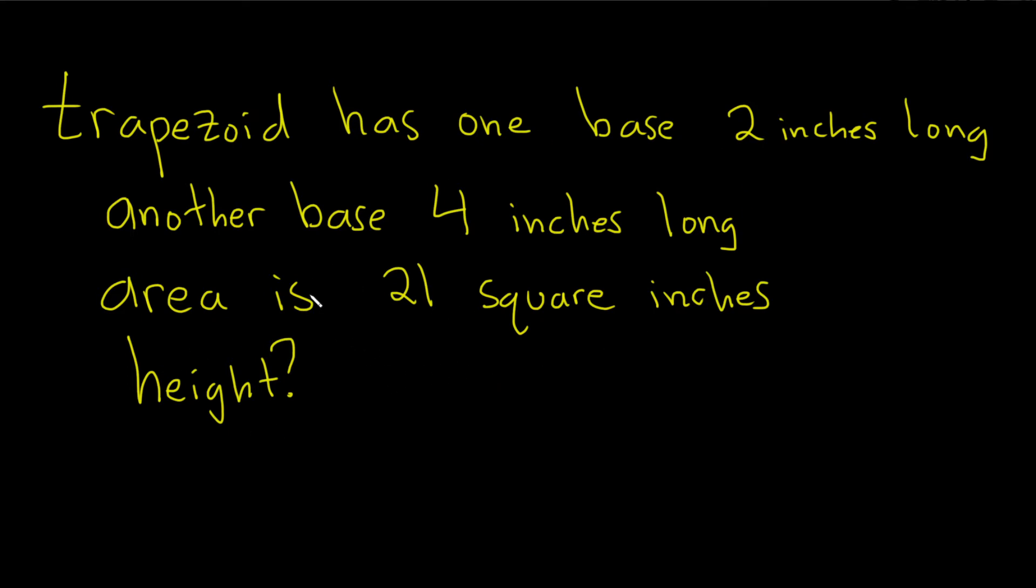It's a lot of information, but the key point is we know it's a trapezoid and we're given the area. So the very first step in a problem like this is to write down the formula for the area.